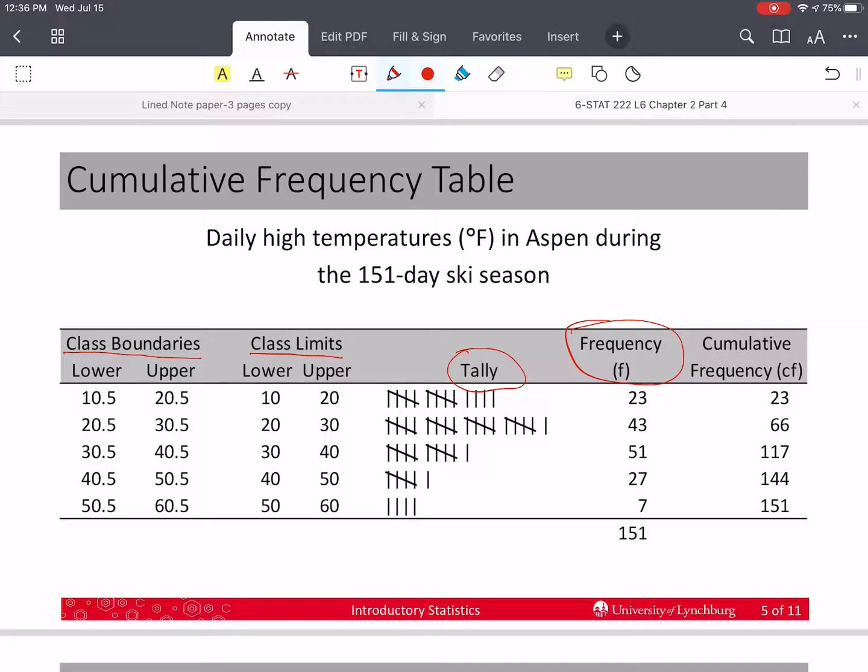And again, when we add up these frequencies, they had best equal the total number of values. We said it was 151-day ski season, so we should have 151 values. So how do we calculate this cumulative frequency?